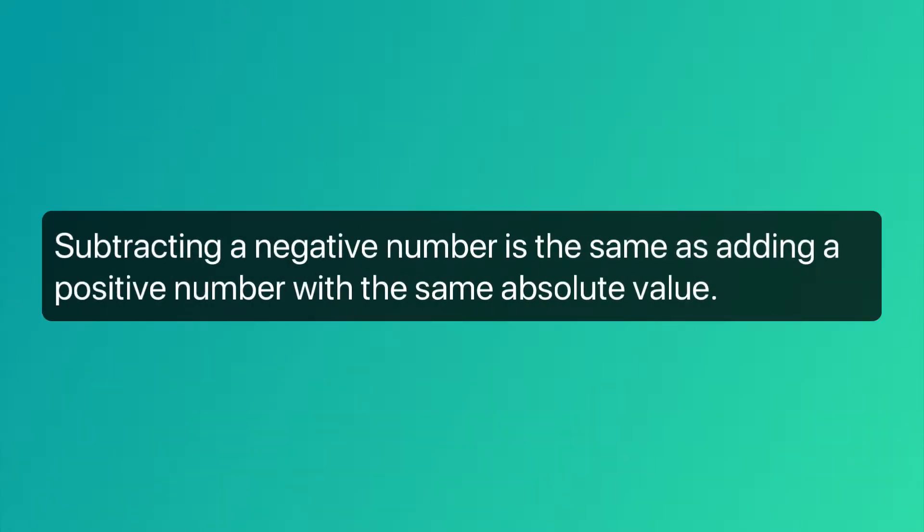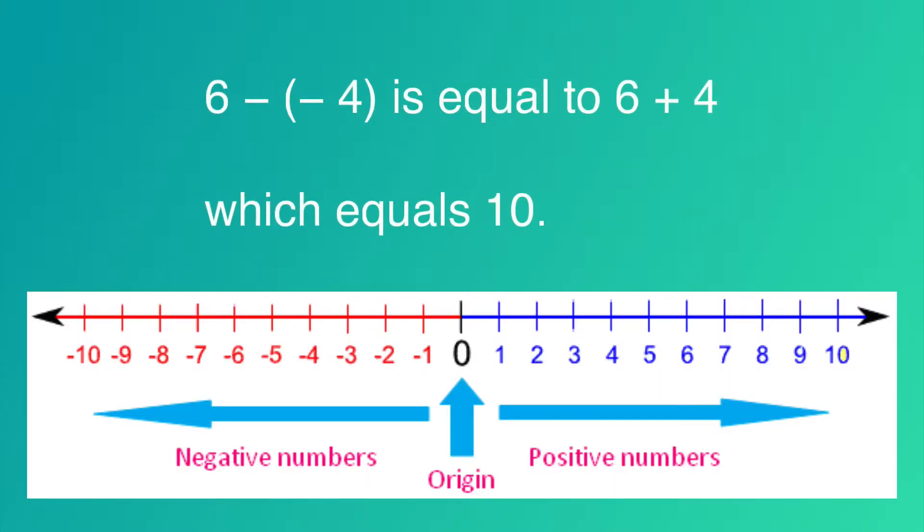Subtracting a negative number is the same thing as adding a positive number. 6 minus negative 4 is the same thing as 6 plus 4, which equals 10. Watch here. Just add 4 numbers to 6 and you get positive 10.